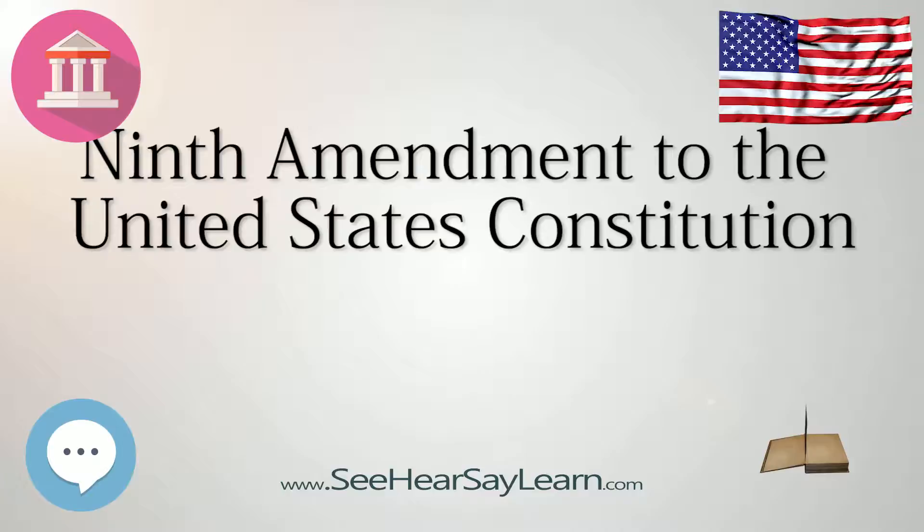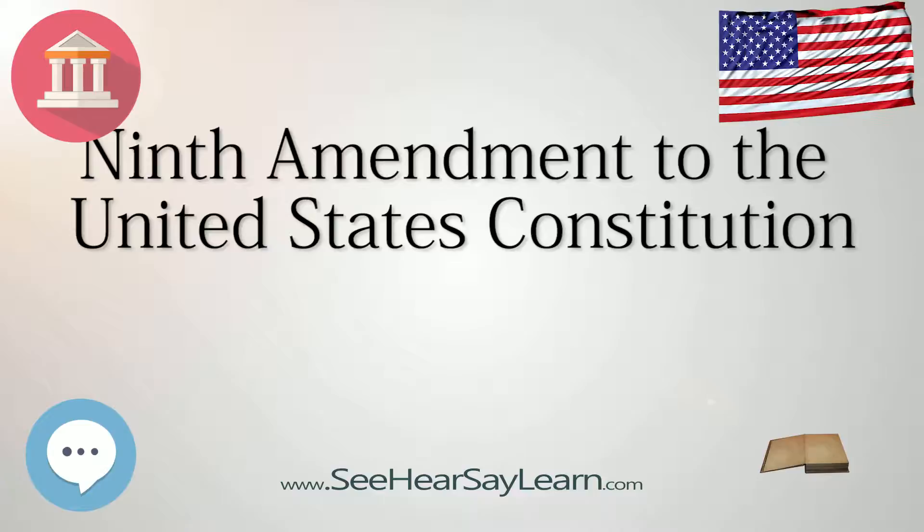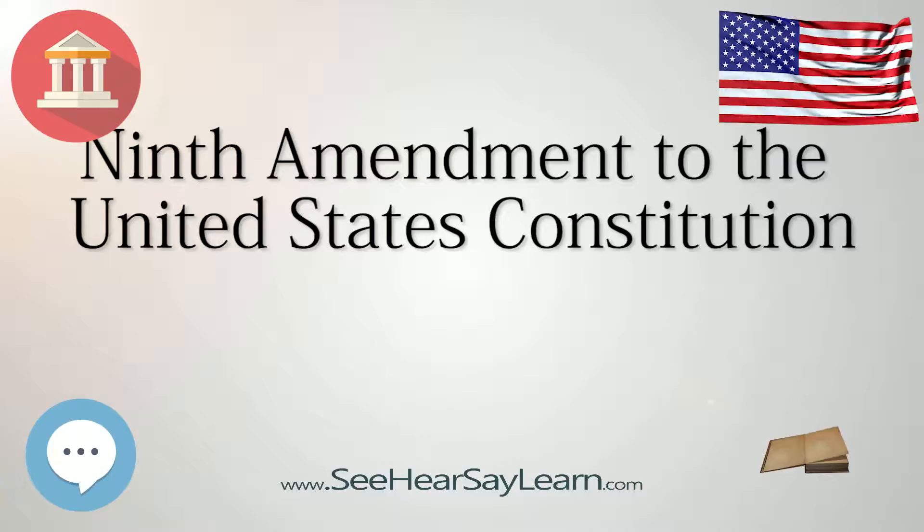One of the arguments the Federalists gave against the addition of a Bill of Rights, during the debates about ratification of the Constitution, was that a listing of rights could problematically enlarge the powers specified in Article I, Section 8 of the new Constitution by implication.